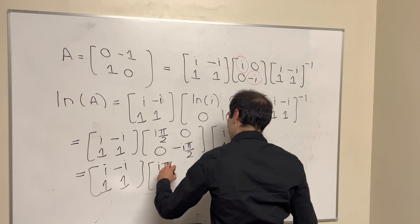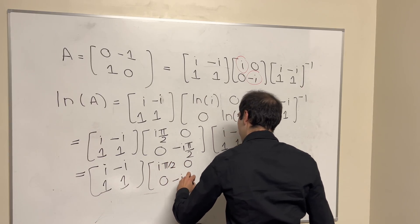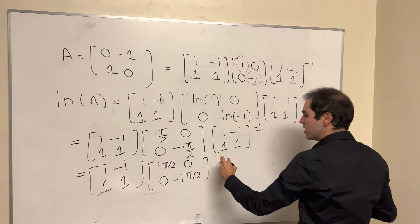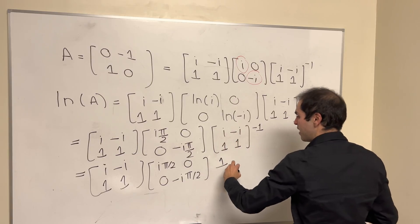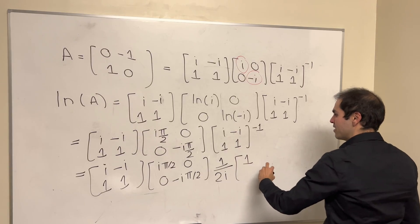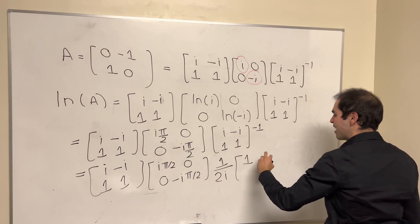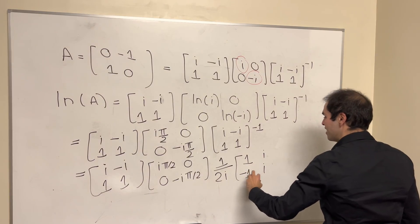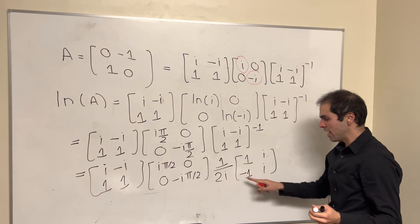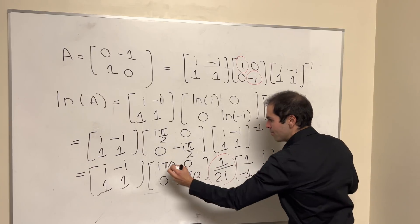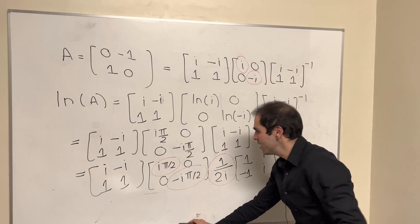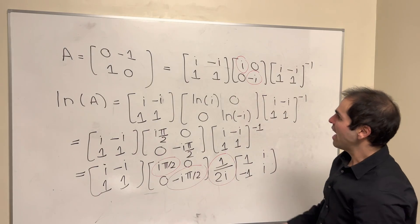For the inverse, it's 1 over the determinant — so I + I = 2i, giving 1/(2i). You flip the diagonal entries to get [1, i] and do minus the anti-diagonal ones, giving [i, −1]. What's neat is we can just distribute the scalar over the diagonal entries, which have i anyway.